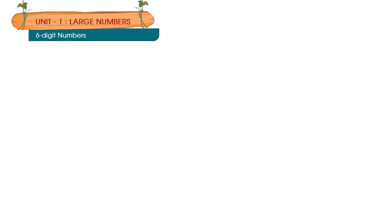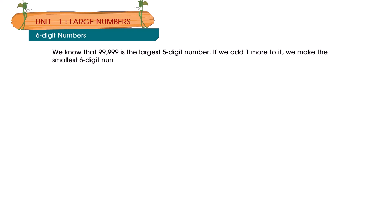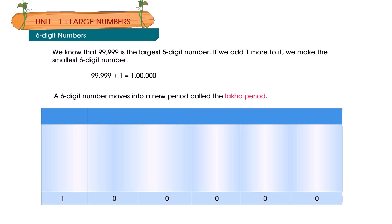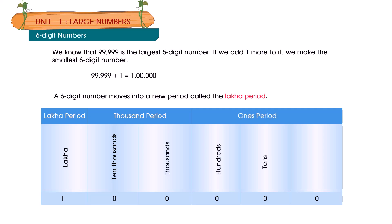6-digit numbers. We know that 99,999 is the largest 5-digit number. If we add one more to it, we make the smallest 6-digit number. 99,999 plus 1 is equal to 1,00,000. A 6-digit number moves into a new period called the lakhs period. The periods are: Lakhs, Ten-thousands, Thousands, Hundreds, Tens, and Ones.